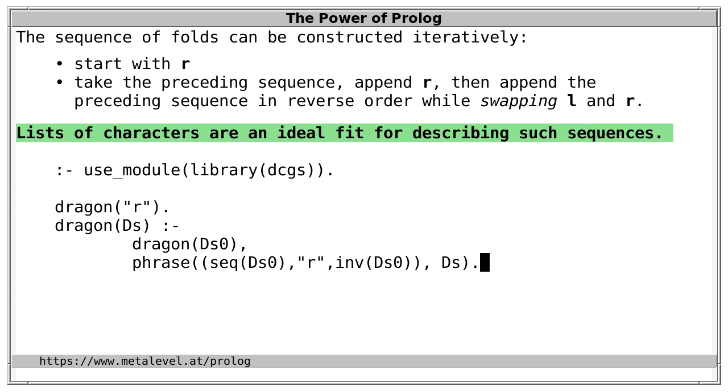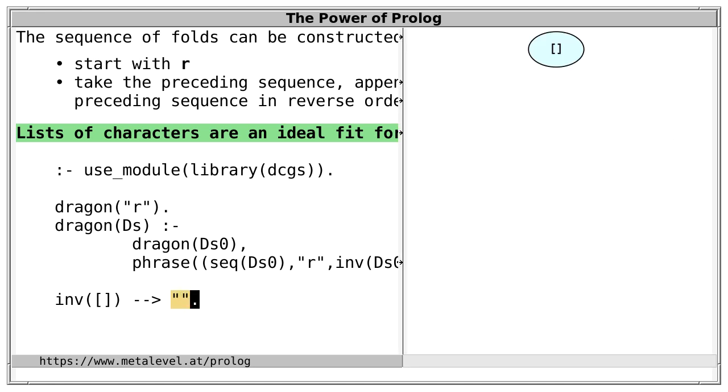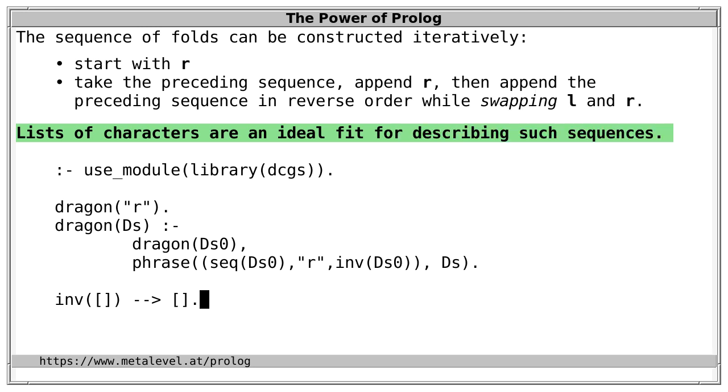Now, we only need to define what we mean with inv. Our inverted, that is, reversed and swapped sequence. So, let's define it as a DCG non-terminal. And we distinguish two cases, based on the inductive definition of lists. First, the empty list inverted is the empty list. So, we use this arrow operator to write the DCG rule. And we could of course write the empty list equivalently as the empty string. That's just a syntactic variant for writing the empty list. So, for the empty list, there is nothing to swap and nothing to reverse.